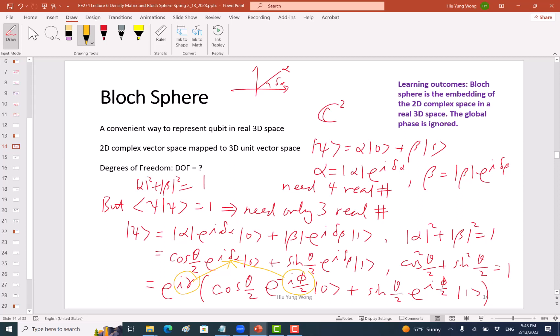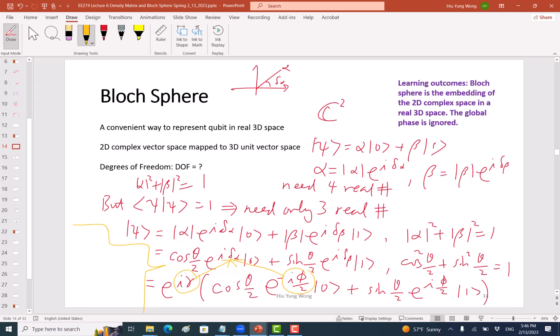So why do I do this? Because this will make it symmetric and then I claim that e to the power I gamma is not important because in all the expectation values, e to the I gamma is the so-called global phase.